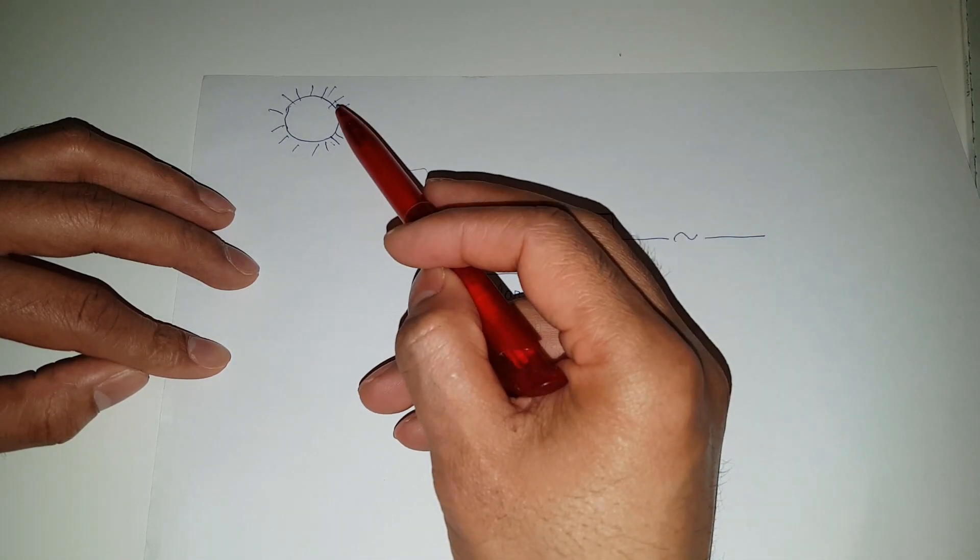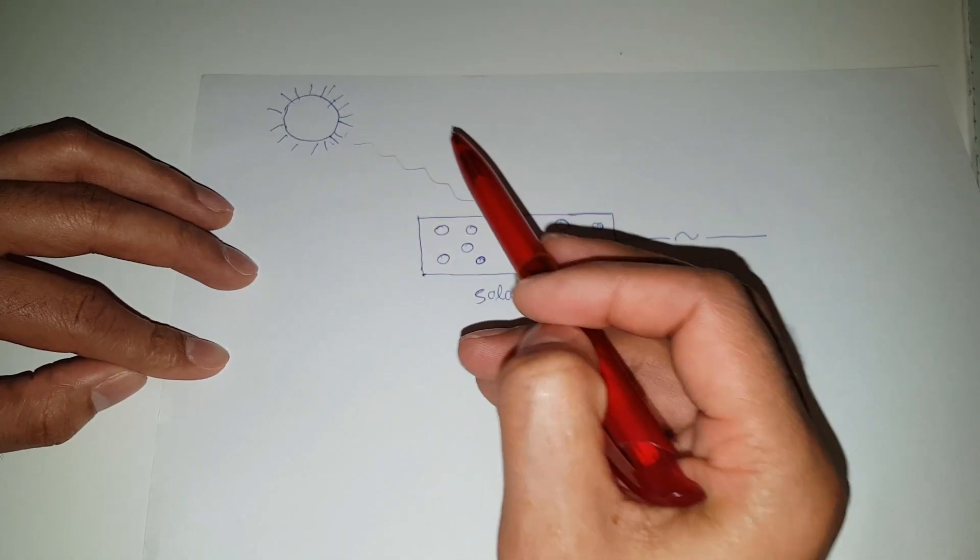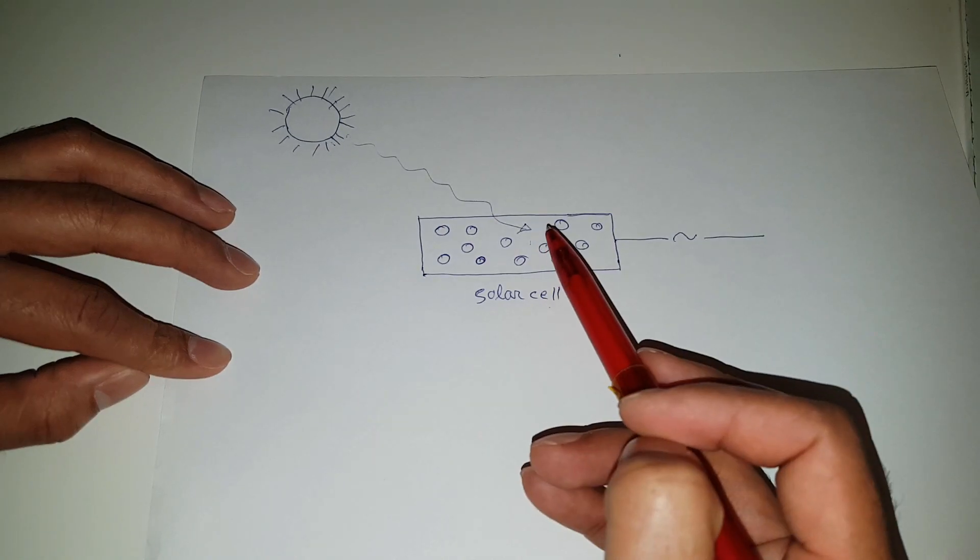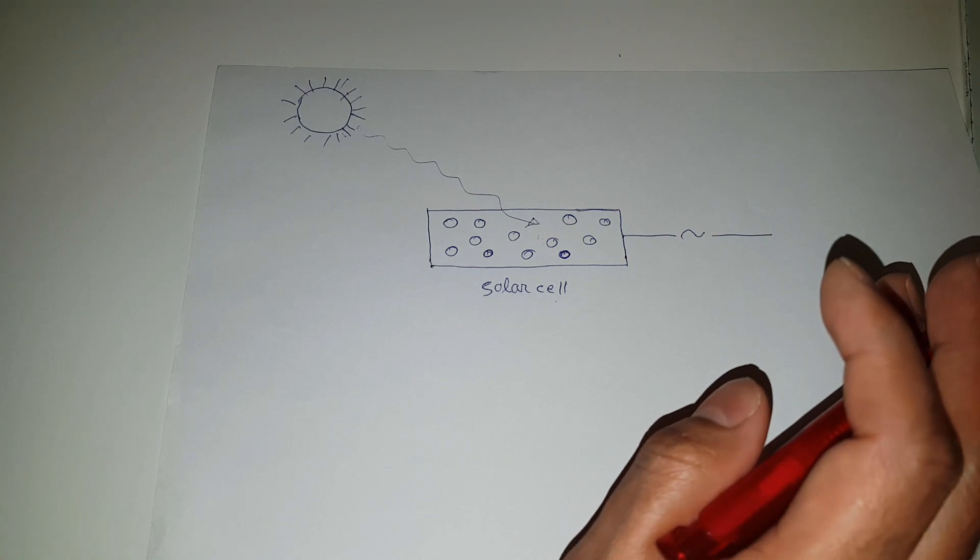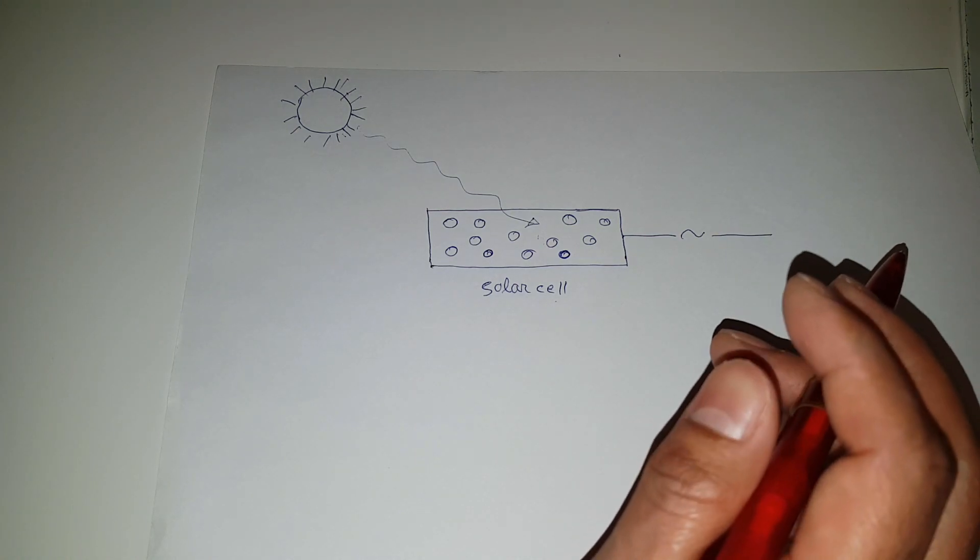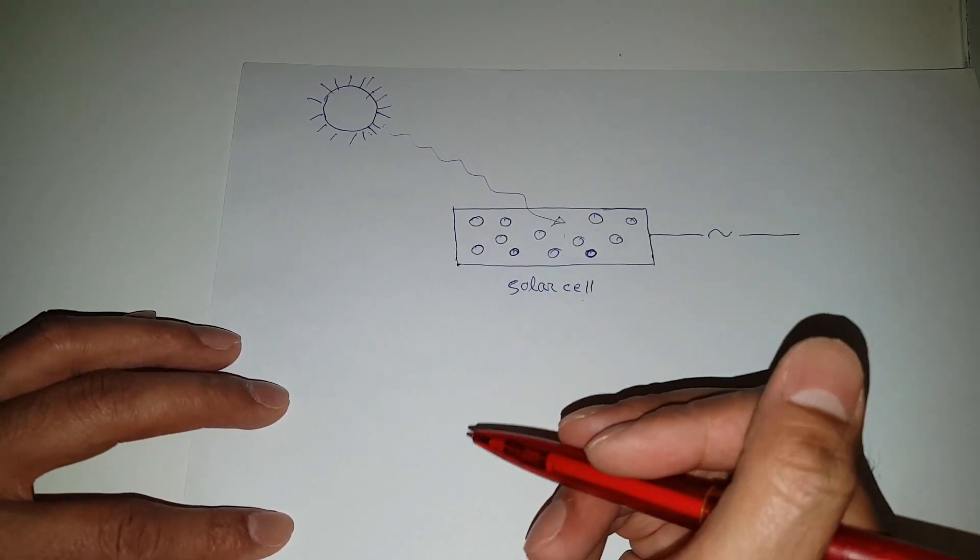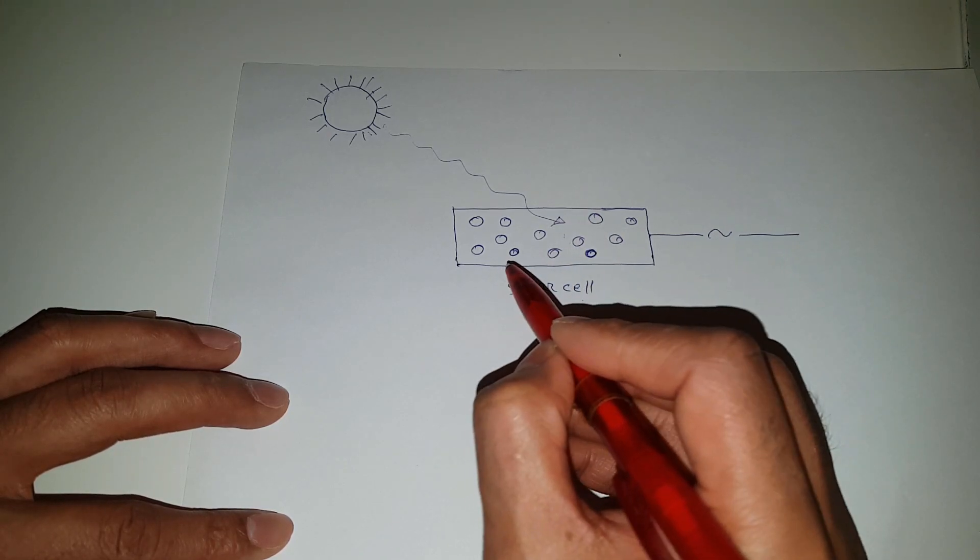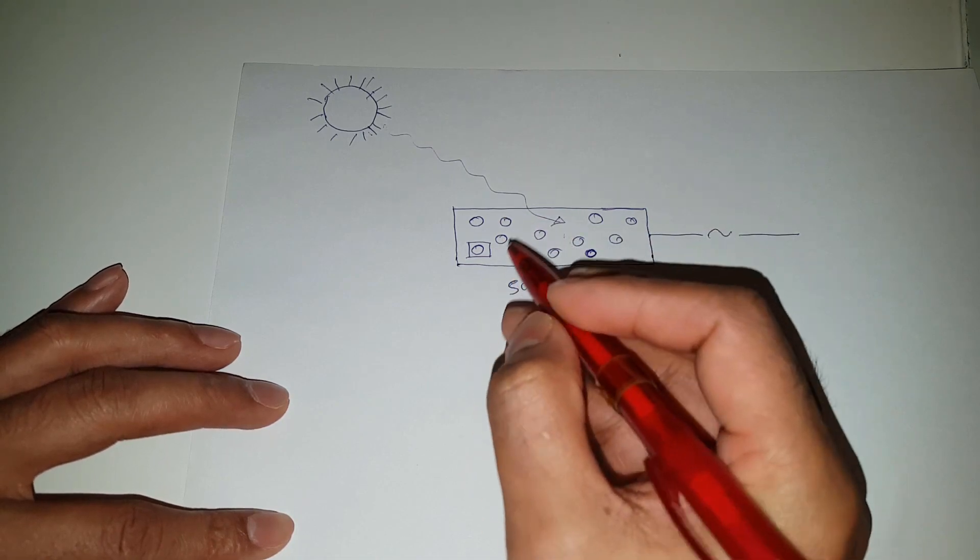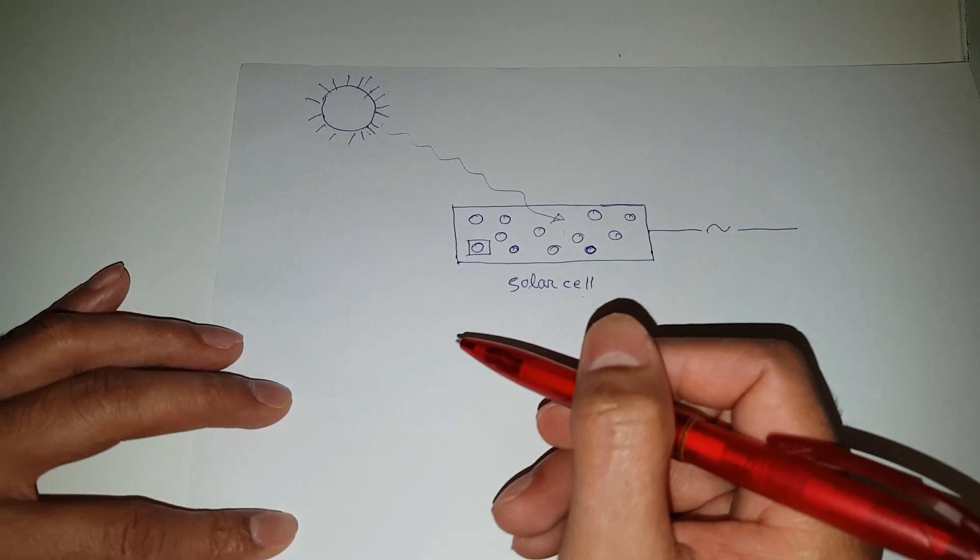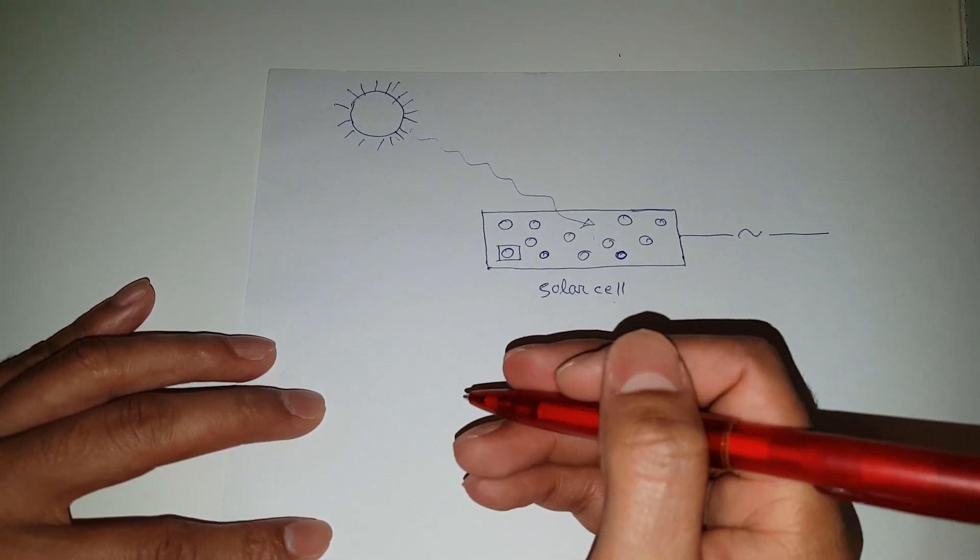When this sunlight is incident on this solar cell and this solar cell becomes excited and it produces electricity. This is simple, within one sentence, I can explain it, but you cannot understand what exactly happened inside. To understand exactly what happened inside of this solar cell, let us consider a single atom. Maybe you can recall your knowledge from high school, how atoms are formed.